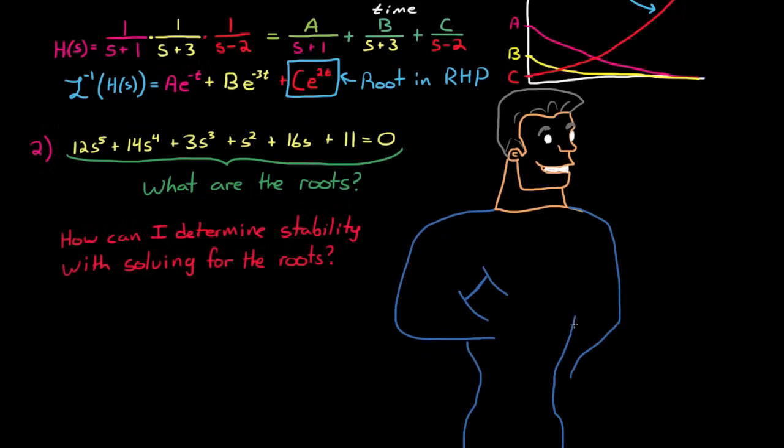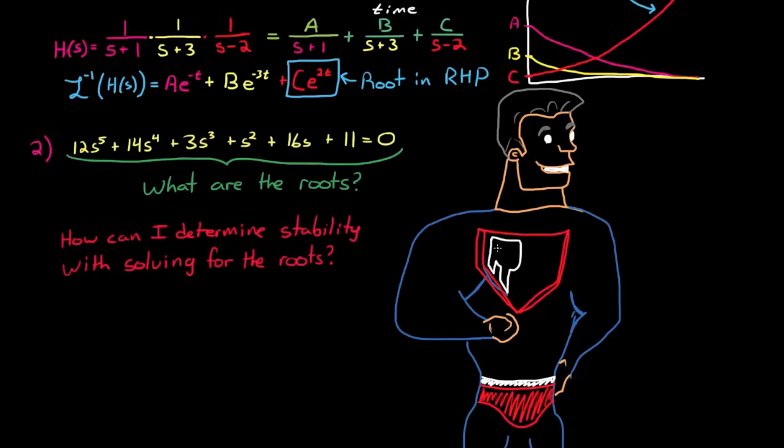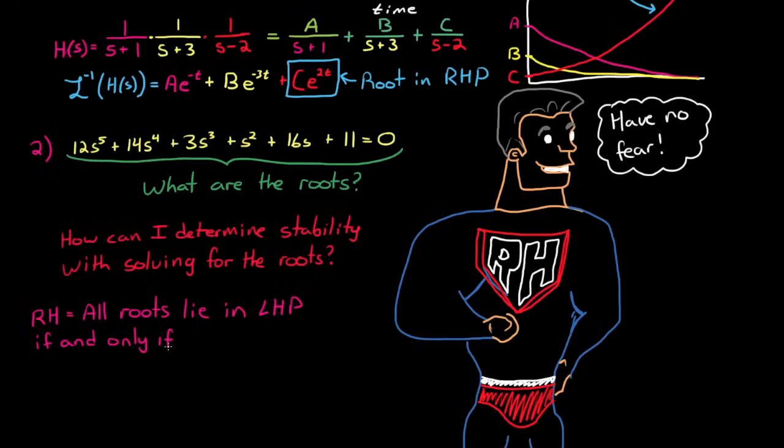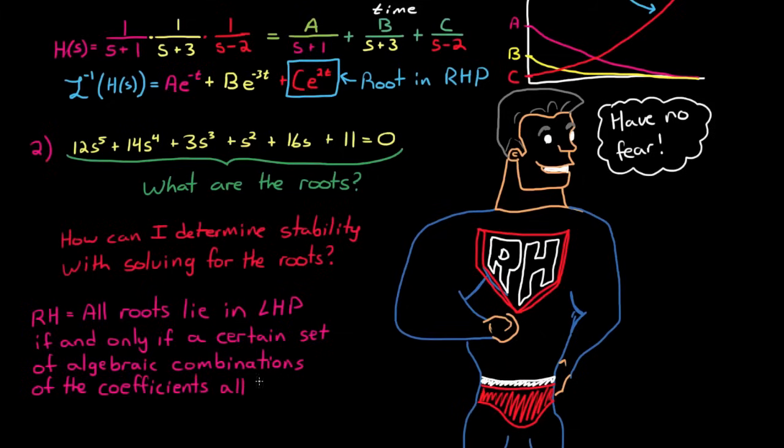One of the ways that you can do this is by using the Routh-Hurwitz criterion and the Routh array. Going through the proof of the Routh-Hurwitz criterion is beyond the scope of this video, but I will cover it in a future lecture if there is enough interest. The Routh-Hurwitz criterion states that all roots of a polynomial lie in the left half plane if and only if a certain set of algebraic combinations of its coefficients have the same sign. This statement, a certain set of algebraic combinations, is really just a cryptic way of saying that you perform the steps to fill out the Routh-Hurwitz array. The great thing about the Routh-Hurwitz array is that you don't have to actually solve for the roots of the characteristic equation. It allows you to assess stability just by looking at the coefficients of the polynomial.